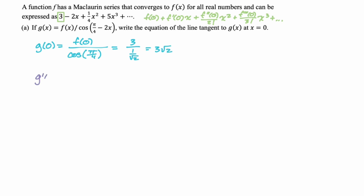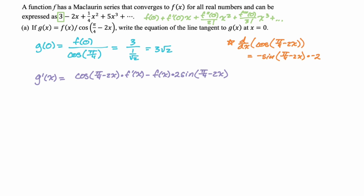Now we need the derivative. g'(x) uses the quotient rule: bottom times derivative of the top, minus the top times derivative of the bottom, all over the bottom squared. For the derivative of the bottom, don't forget the chain rule — the derivative of cosine is negative sine, and we also pick up a negative 2 from the chain rule, giving us positive 2 times sine(π/4 minus 2x).